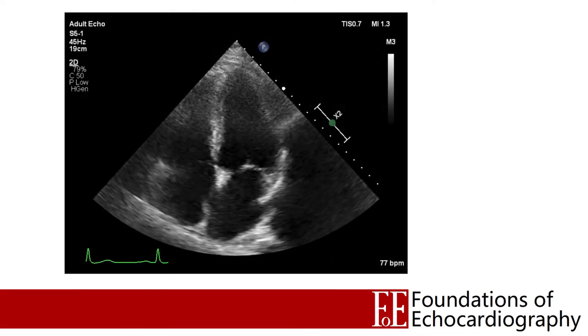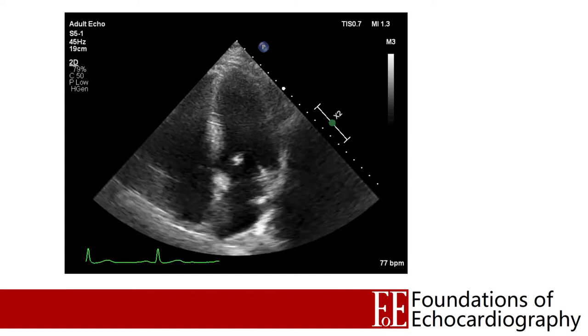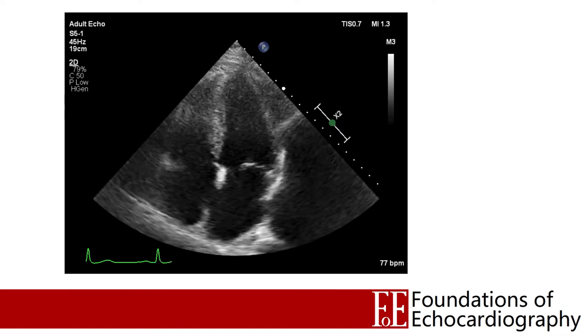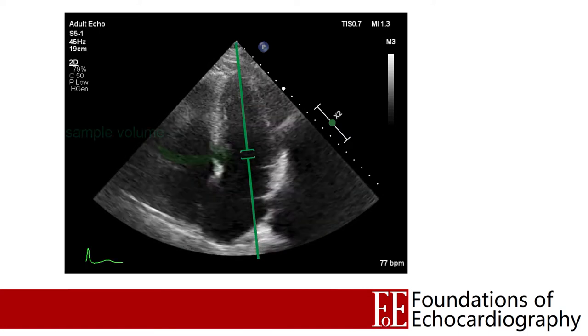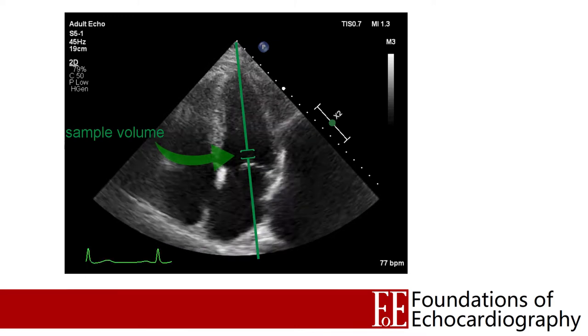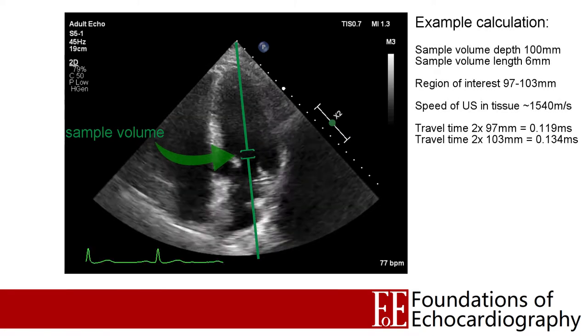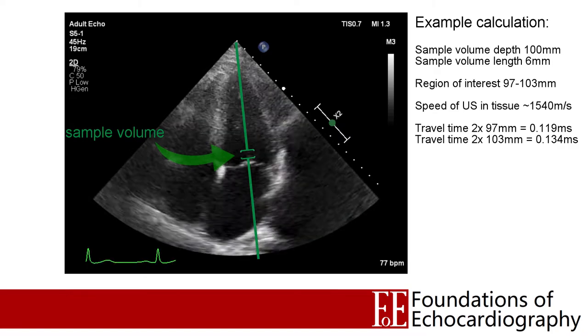So how can we exploit this principle and use it to generate an image that's practically useful, one that demonstrates the flow within the heart? Let's consider how we can determine and represent the flow of blood at a single point in space. This is an apical 4 chamber view, and let's imagine we're interested in the flow of blood from the left atrium to the left ventricle during diastole. We can tell the ultrasound software the specific area we're interested in by laying a cursor down the length of the left ventricle, with a small bracket called our sample volume. In this example our sample volume is 10 centimetres from the probe with a length of 6 millimetres.